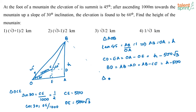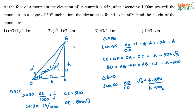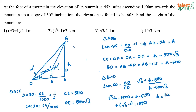Now consider triangle BCD. Tan 60 equals BD by CD, which is √3, and BD equals h minus 500. So √3 equals (h minus 500) divided by (h minus 500√3). Solving: √3·h minus 1500 equals h minus 500, so h(√3 minus 1) equals 1000, giving h equals 1000 divided by (√3 minus 1).